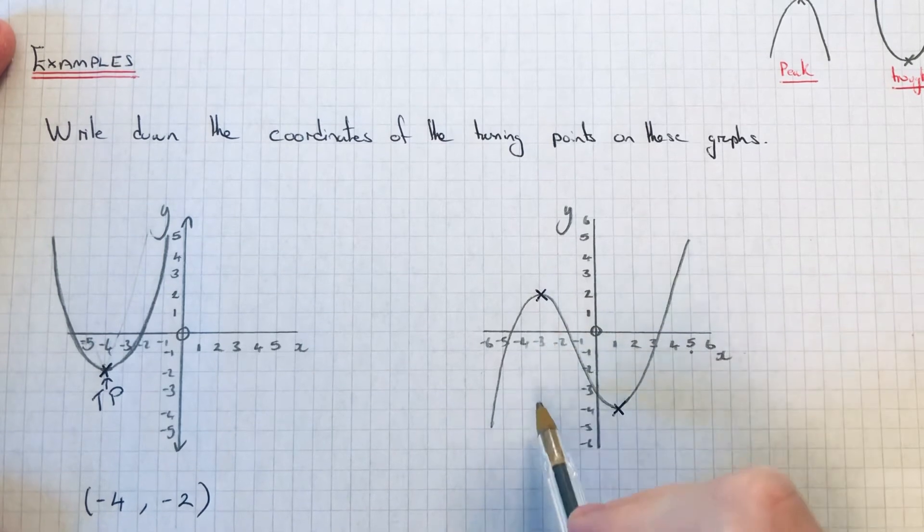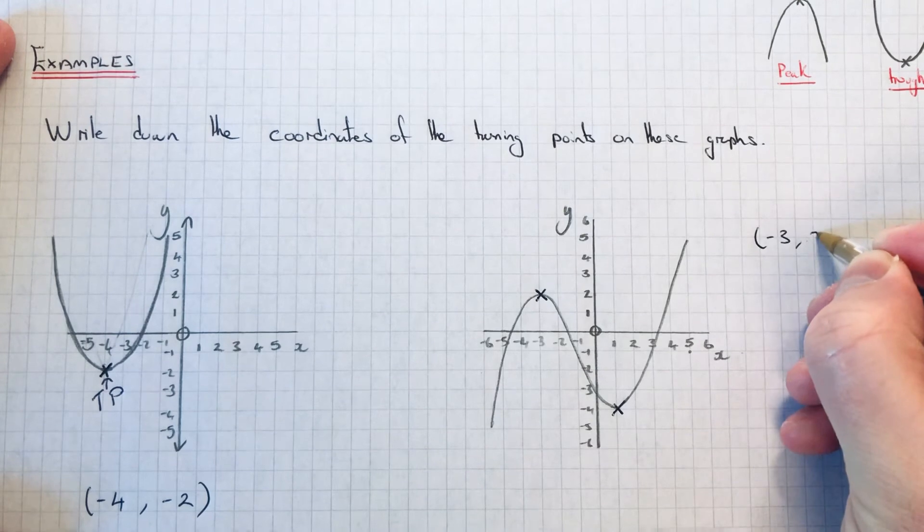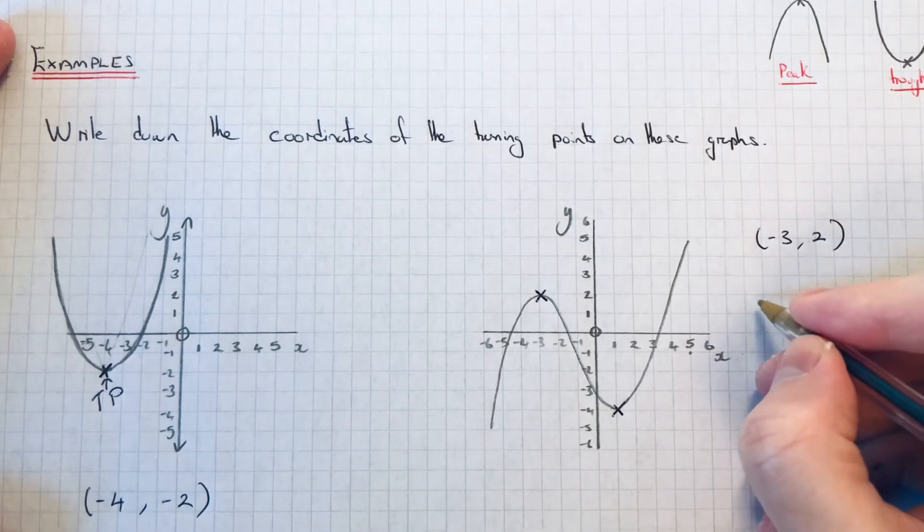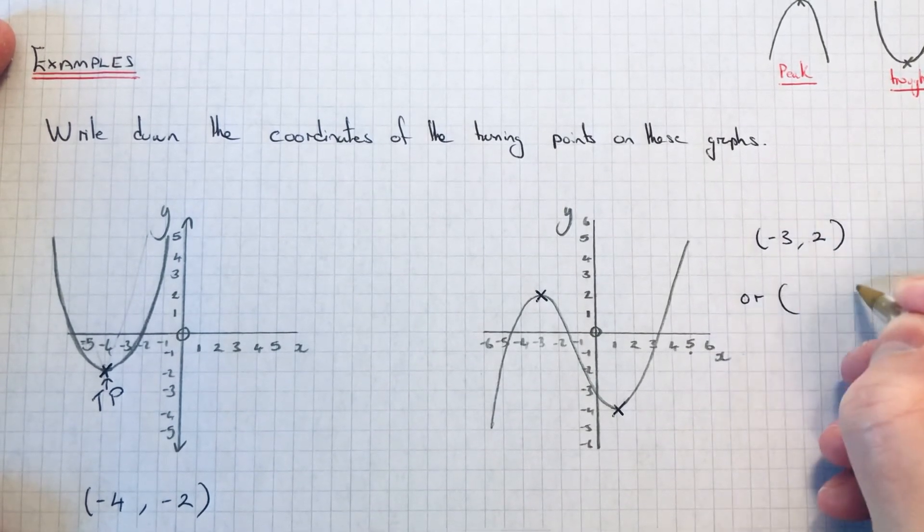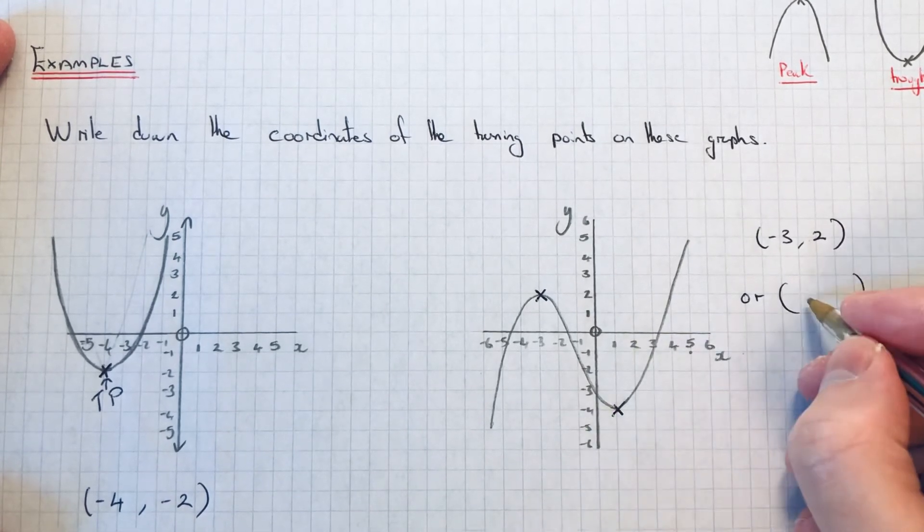So the peak has a turning point of minus 3, 2. And the second turning point is a trough which is at 1, minus 4.